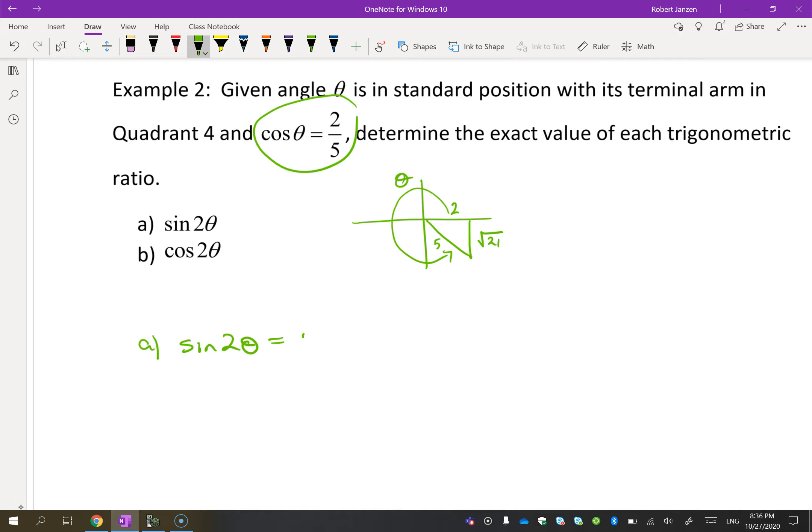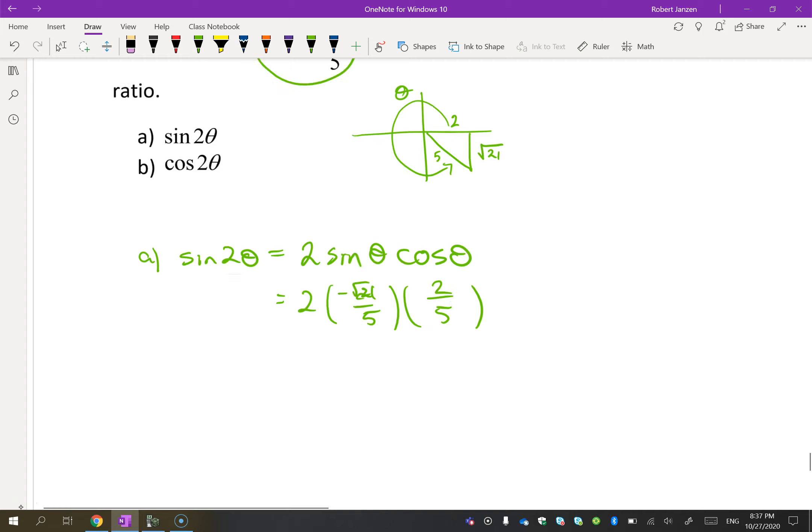So to do 2 theta, we're going to use this identity. We know these two things are equal. And why do we want to use that? Well, you know what these two are. I know that cos theta is 2 over 5. I know that sine theta is negative root 21 over 5. I know what sine of theta is, I don't know what sine of 2 theta is. Now we can multiply this out. We're going to get 4 root 21 over 25.